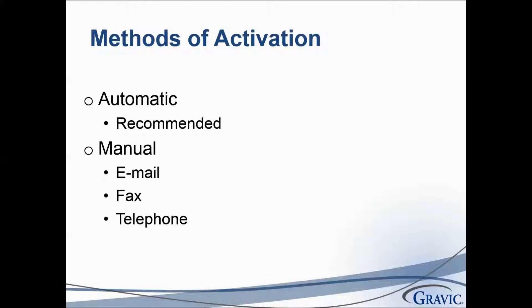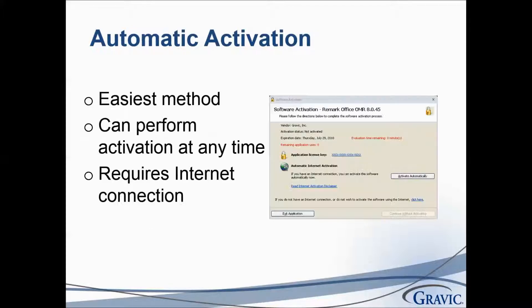There are two methods of activation. The first method is automatic, which is recommended, and goes out over the internet to validate your license on our secure server. There are also three manual methods of activation: email, fax, and telephone. Automatic activation is the easiest method and you can perform it at any time, though it does require an internet connection to our secure server.